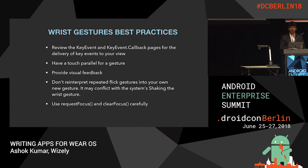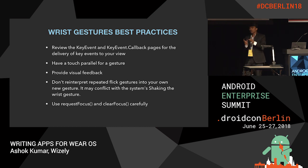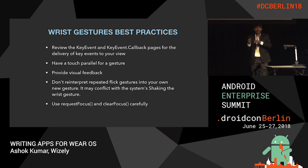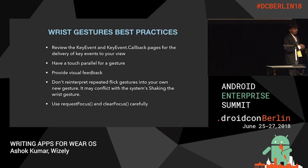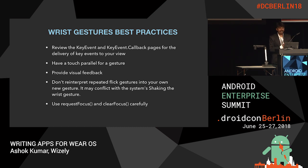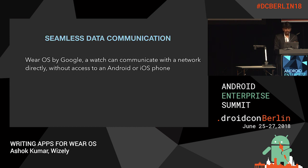Best practices for wrist gestures: review the key event and key event callbacks. Make sure you have a parallel gesture for every wrist gesture you use — for example, if using a wrist gesture for next image, also have a visual view component to perform the same action. Do not interpret repeated flick gestures into your own new gesture, as it may conflict with the system's shaking wrist gestures. Use request focus and clear focus carefully to allow restarting gesture events.